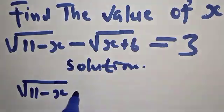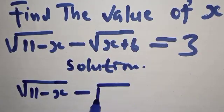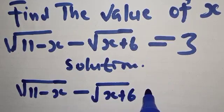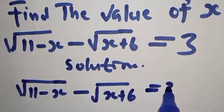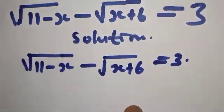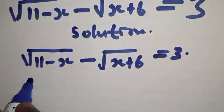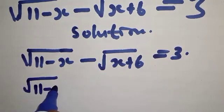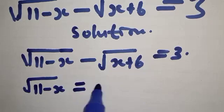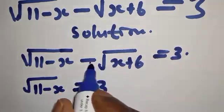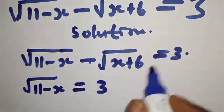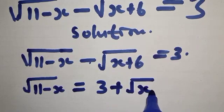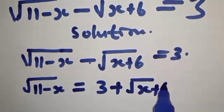The question says: square root of 11 minus X, minus square root of X plus 6, is equal to 3. This implies that if we move square root of X plus 6 to the other side, we have square root of 11 minus X equals 3 plus square root of X plus 6.